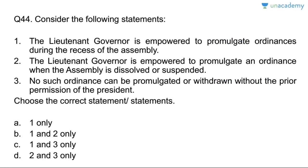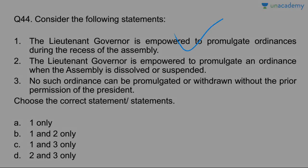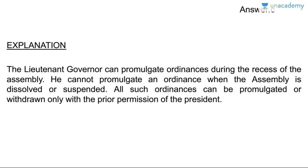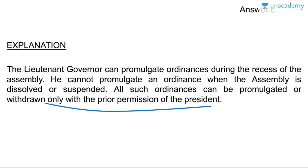Question forty-four: the Lieutenant Governor is empowered to promulgate ordinances during the recess of the assembly — yes. The LG is empowered to promulgate ordinances when the assembly is dissolved or suspended — no, this is wrong. No such ordinances can be promulgated or withdrawn without the prior permission of the President — correct. Answer is C, one and three. The LG can promulgate ordinances during recess but not when the assembly is dissolved or suspended, and all such ordinances require the prior permission of the President.